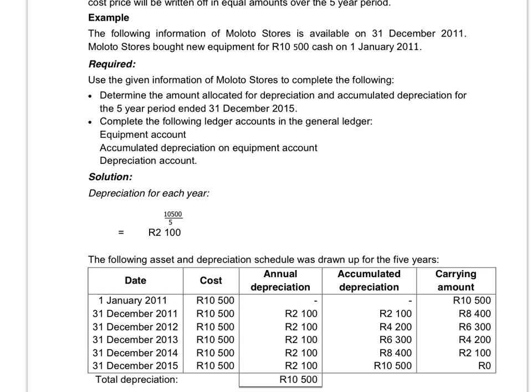When we use this method we calculate depreciation on the cost price for the whole period that you use the asset. That's why it's also called straight line, because you write off the same amount of depreciation every year, and that's why it's also called fixed installment. According to this method, the equal amount is allocated to each accounting period over the useful life of the asset. So if we decide to use this asset for five years, it means that we will take the cost price divided by five to see how much we have to write off each year.